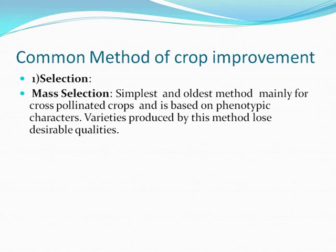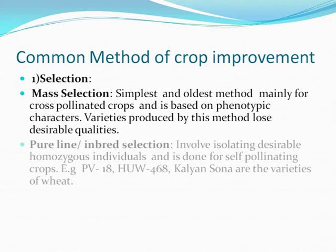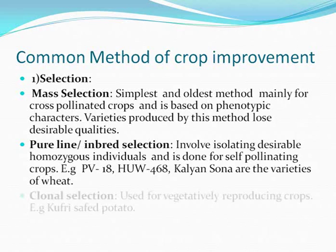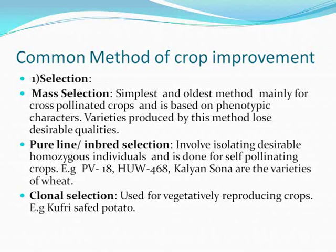Pure line or inbred selection involves isolating desirable homozygous individuals and is done for self-pollinating crops. Examples are PV-18, HUW-468, and Kalyan Sona, which are varieties of wheat. Clonal selection is used for vegetatively reproducing crops; examples include the Kofri Shaphid potato variety.